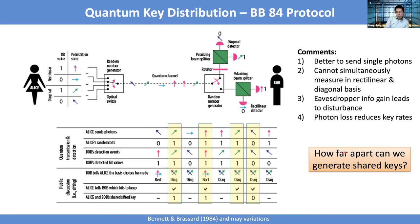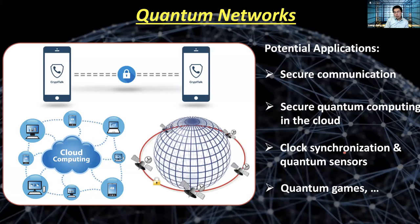This leads to a very useful application called quantum networks — a network that allows you to send quantum states or generate quantum entanglement over a distance, so that you can use it as a resource for secure communication, quantum cloud computing, clock synchronization, quantum sensors, or quantum games.